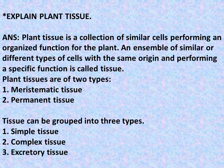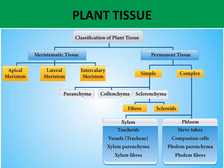Plant tissues are of two types: one, meristematic tissue; two, permanent tissue. Tissue can also be grouped into three types: simple tissue, complex tissue, and excretory tissue. Here is a classification of plant tissue. Plant tissues are divided into two main parts: meristematic tissue and permanent tissue. Meristematic tissue is again divided into three parts: apical meristem, lateral meristem, and intercalary meristem.